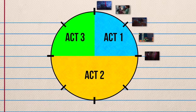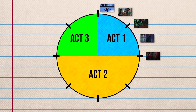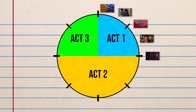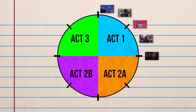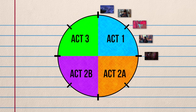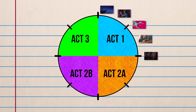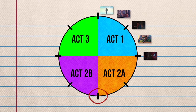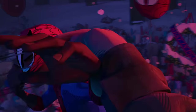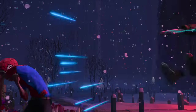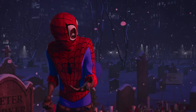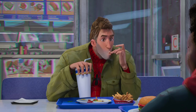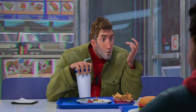And here we begin Act 2, which is the longest act and where the majority of our plot events take place. I like to split Act 2 into two sections — Act 2A and Act 2B — splitting it right at the midpoint of the film. We can begin this part of the story by introducing the protagonist to new companions and allies, such as in Spider-Verse, Peter B. Parker.